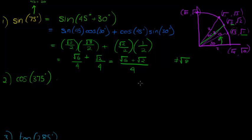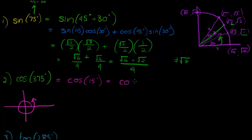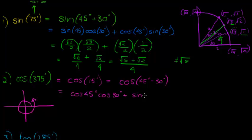For the next one, cos of 375 degrees, we first have to write it as an acute angle. Notice that 375 is past 360, so we can subtract 360 and it won't change the sign. We just get cos of 15 degrees, which is cos of 45 degrees minus 30 degrees. That can be written using the compound angle identity: cos of 45 cos of 30, and since the minus becomes a plus — different signs, same ratios — plus cos 45 becomes sin of 45, sin of 30 degrees.